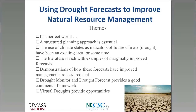In a perfect world, we would have forecasts of very high reliability at spatial and temporal resolution that's perfect for decision making, going as far out in the future as we would care for them to go. Of course that is not the case. So what I want to talk about today is a very structured planning approach to drought management, which I think is essential whether we're talking about ecological droughts or droughts of any other sort.